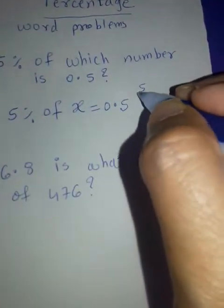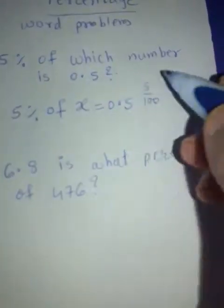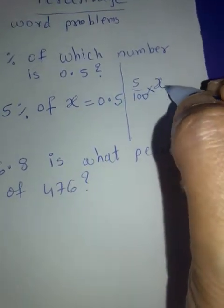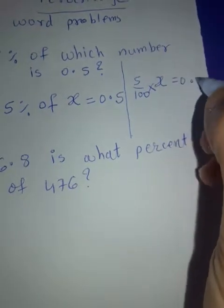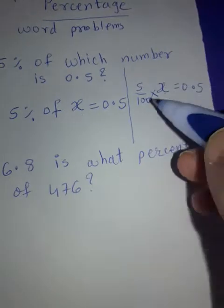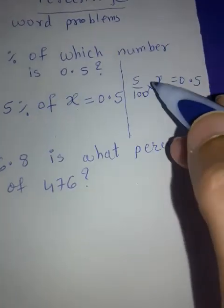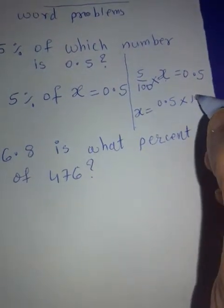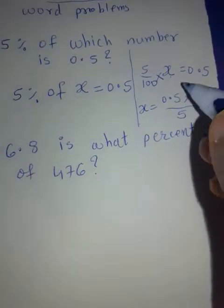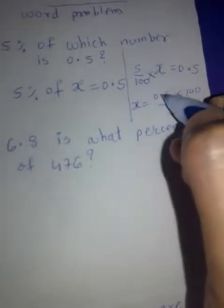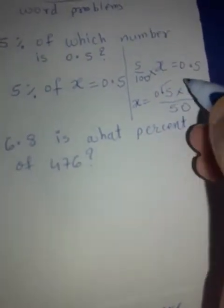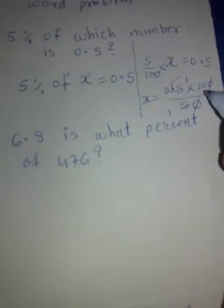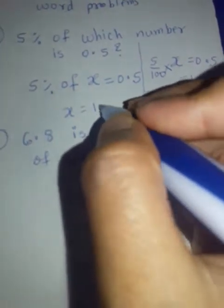What is 5% of? It is 5 upon 100. 5% is 5 upon 100; 'of' means multiplication; x as it is. This equals 0.5. So for x, we will take this 100 up here and 5 in the denominator. So x will be 0.5 into 100 upon 5. 100 here and 5 here — shift the decimal point one place. This simplifies and only 10 remains.